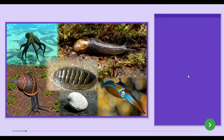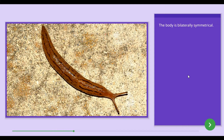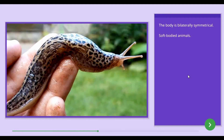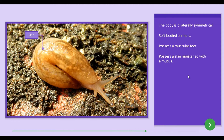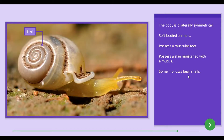The common features of animals in the Mollusca group are as follows. The body of Mollusca is bilaterally symmetrical. They are soft-bodied animals. Molluscs possess a muscular foot. They possess a skin moistened with mucus. Also, some Molluscs bear shells.